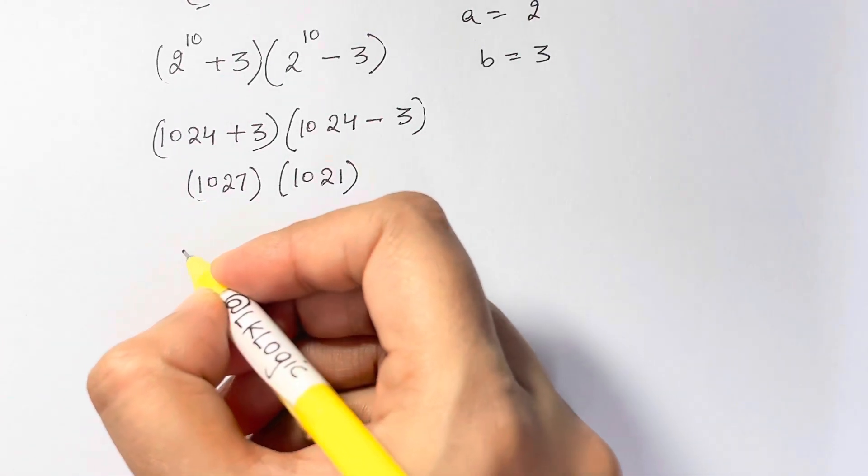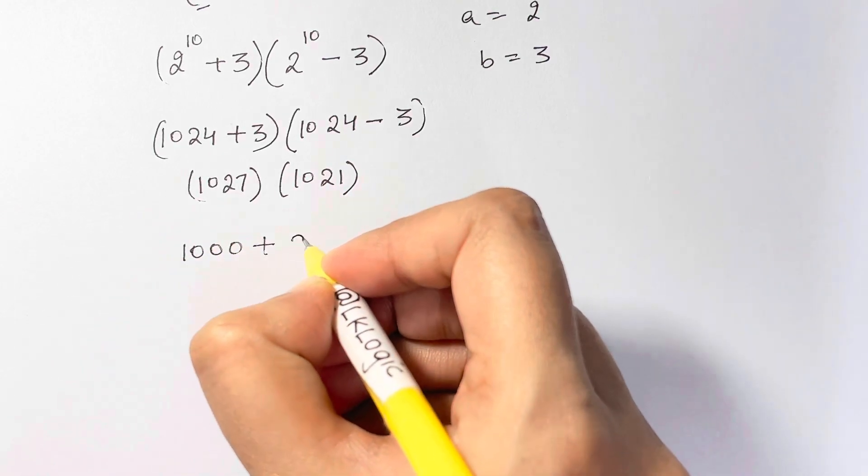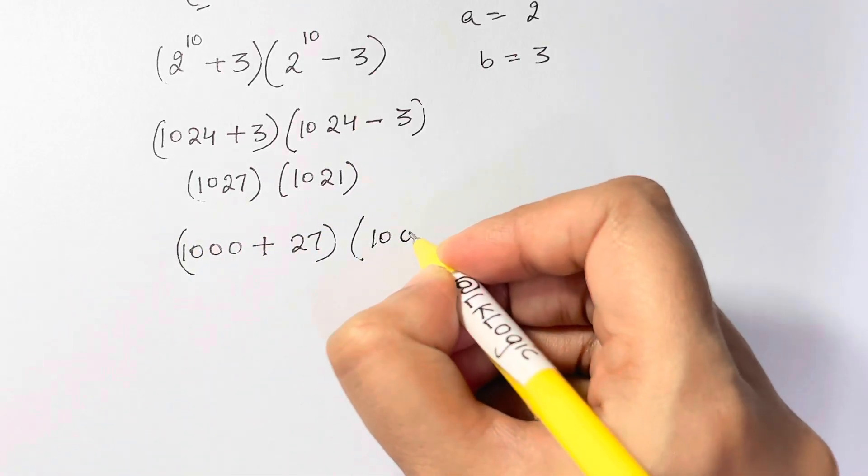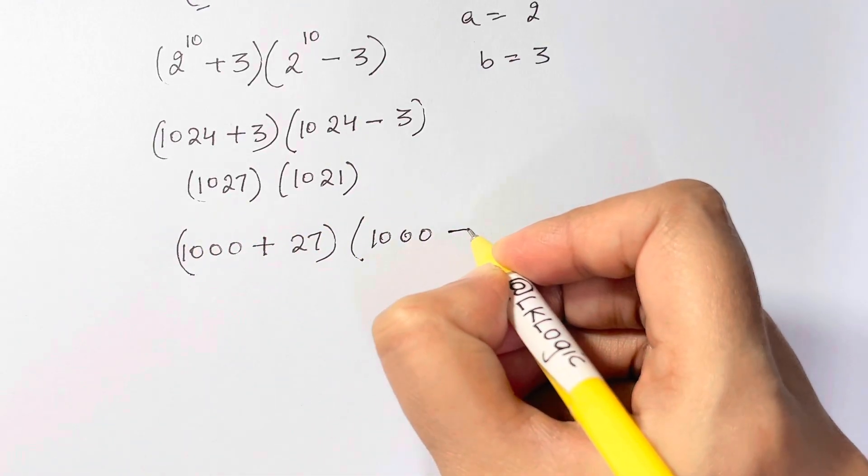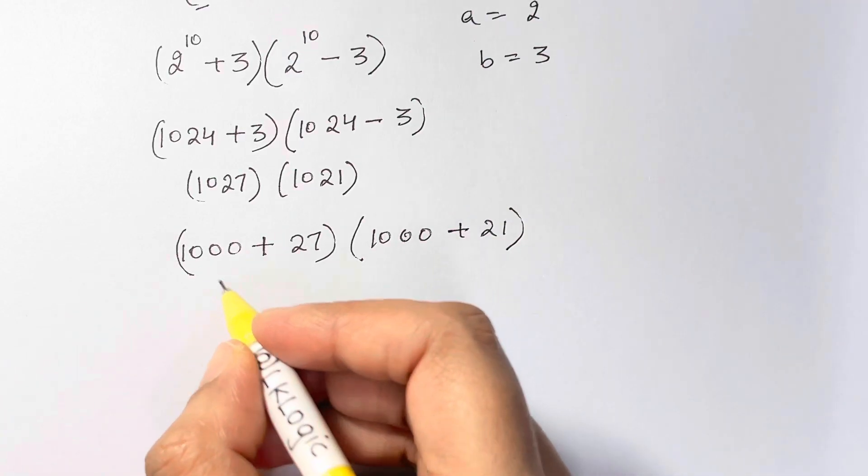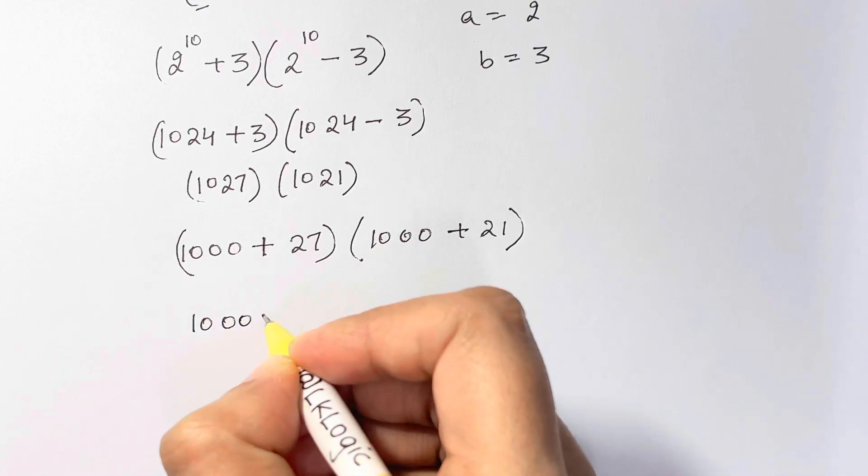Now multiplying this is also not easy, so we're going to split them: 1000 plus 27, then times 1000 plus 21. Now using FOIL method, we are going to multiply.